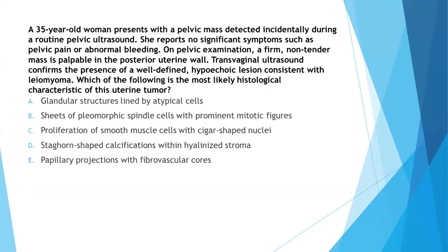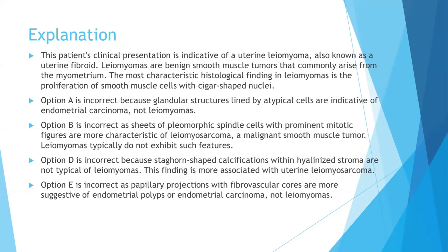Next question: Which of the following is the most likely histological characteristic of this uterine tumor? A 35-year-old woman presents with a pelvic mass detected incidentally during a routine pelvic ultrasound. She reports no significant symptoms such as pelvic pain or abnormal bleeding. On pelvic examination, a firm non-tender mass is palpable in the posterior uterine wall. Transvaginal ultrasound confirms a well-defined hypoechoic lesion consistent with a leiomyoma. Options: glandular structures lined by atypical cells; nests of pleomorphic spindle cells with prominent mitotic figures; proliferation of smooth muscle cells with cigar-shaped nuclei; staghorn-shaped calcifications within hyalinized stroma; or papillary projections with fibrovascular cores.